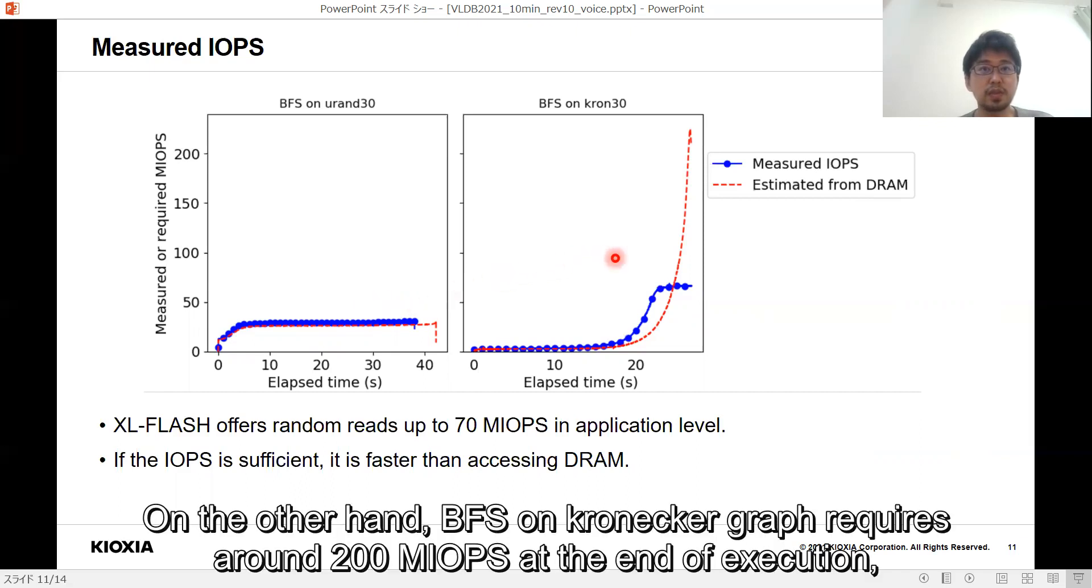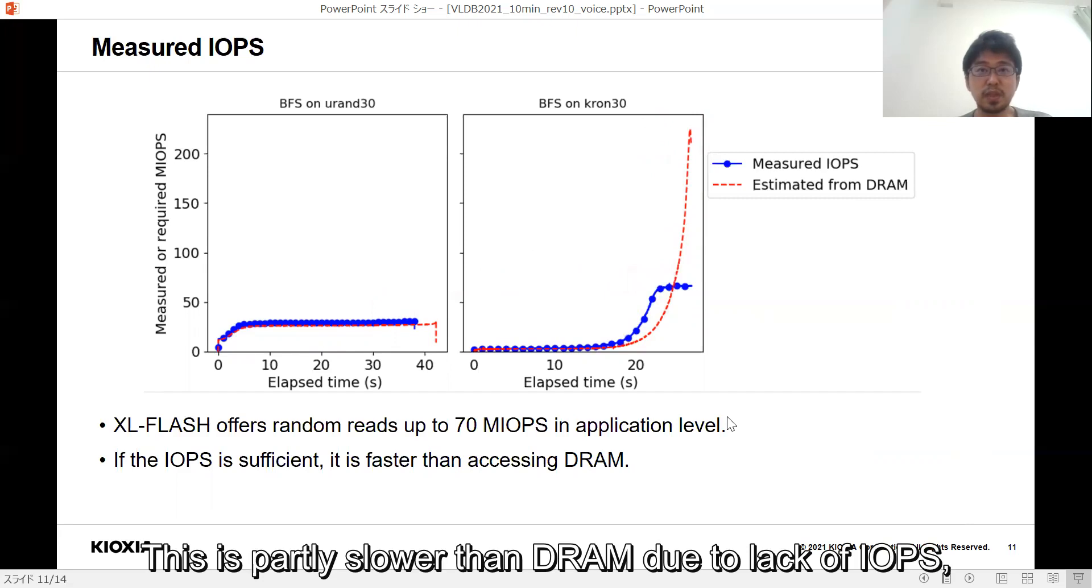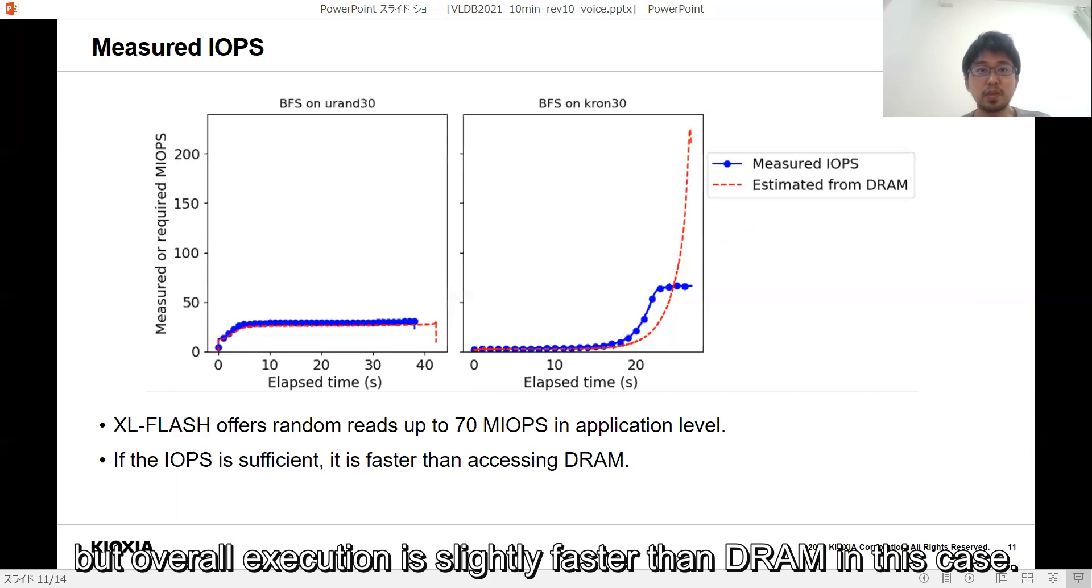On the other hand, BFS on Kronecker Graph requires around 200 million IOPS at the end of execution, while XL-FLASH peaks at 17 million IOPS. This is partly slower than DRAM due to lack of IOPS, but overall execution is slightly faster than DRAM in this case.